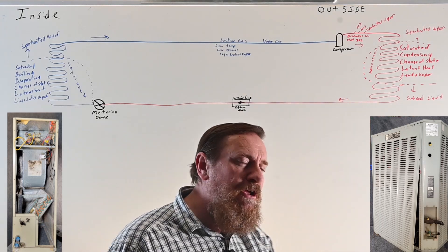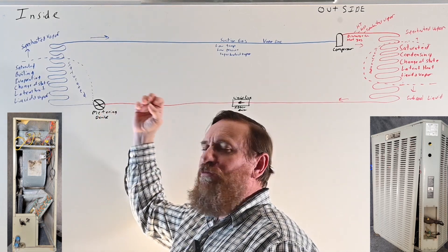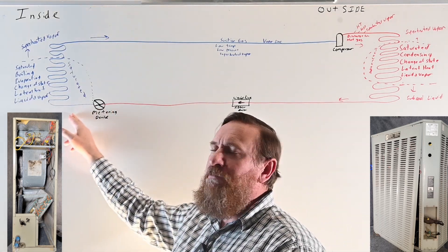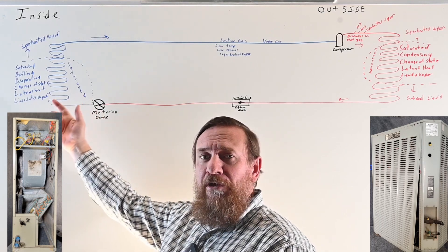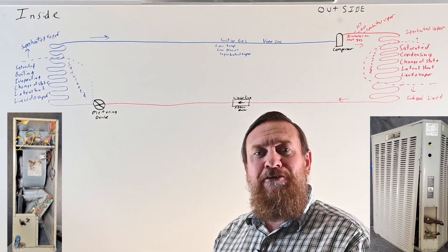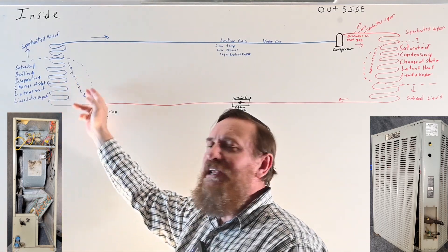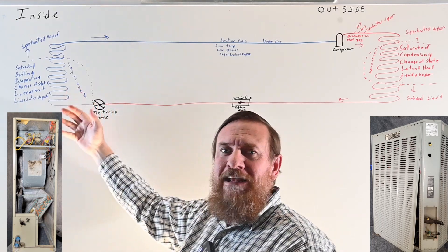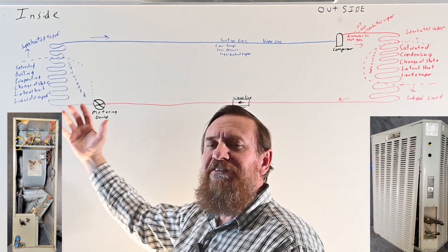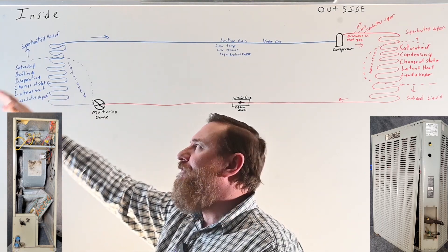You touch the line and it's a warm sub-cooled liquid. From there we travel through our liquid line filter dryer and hit our metering device. That metering device reduces the pressure, which drops the boiling temperature, so the refrigerant can boil at a very low temperature. As it boils and changes state, it absorbs heat. The heat from the air in the house makes the refrigerant boil, and that refrigerant boiling absorbs heat from the air, so we're literally absorbing heat from the cooler indoor air and putting it into the refrigerant.